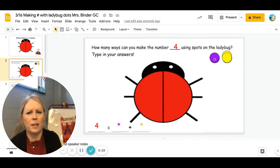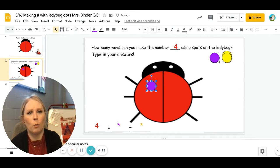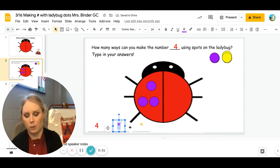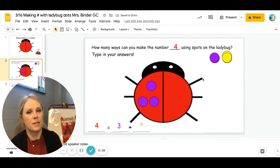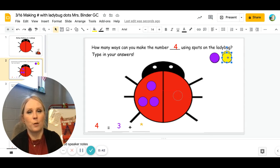I'm going to put three purple dots on one side. One, two, three. I'm going to type in the number three to match in the number sentence. Four equals three purple and one yellow.